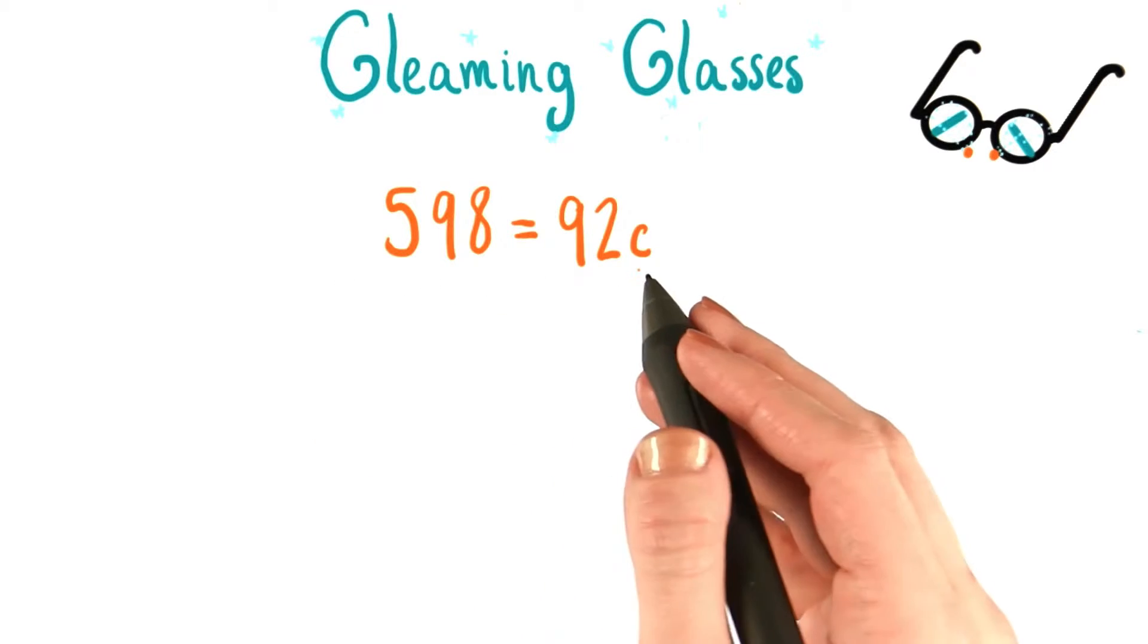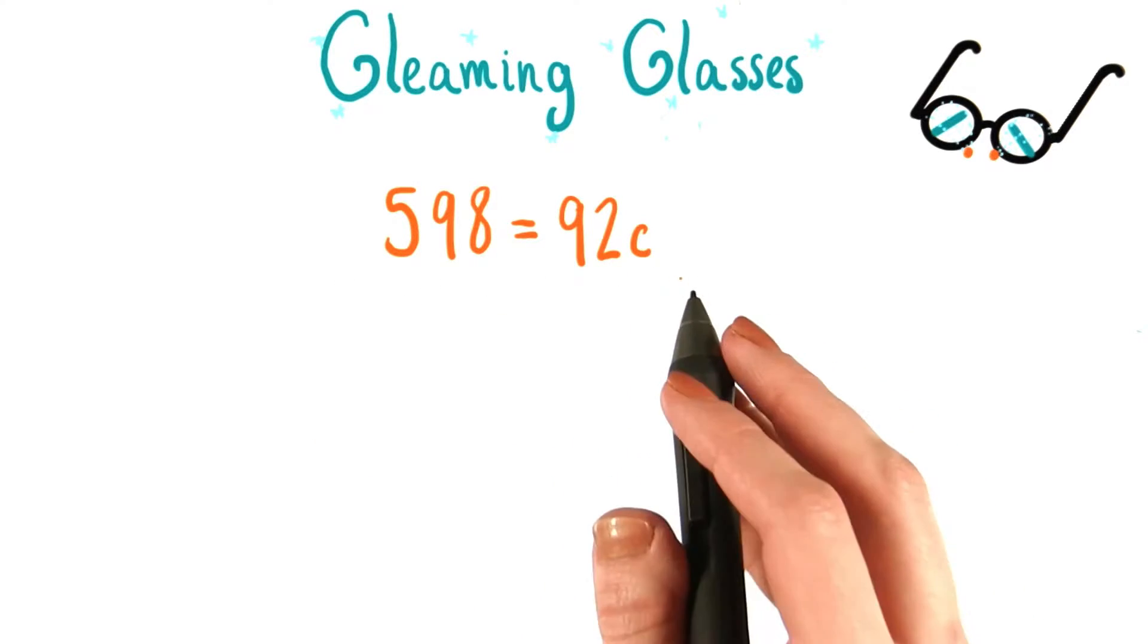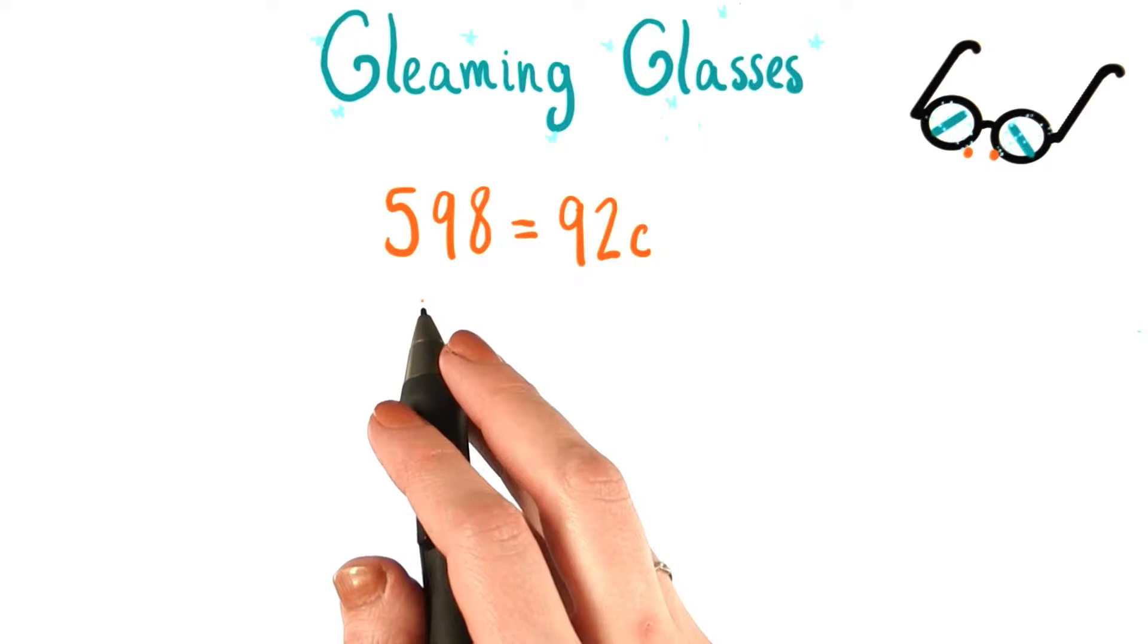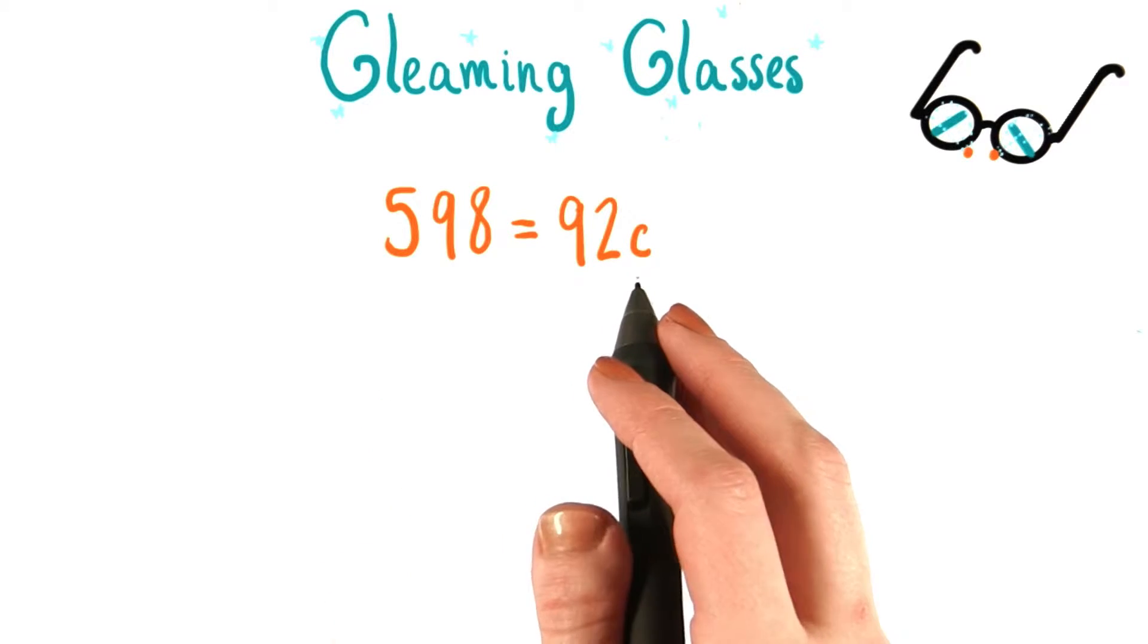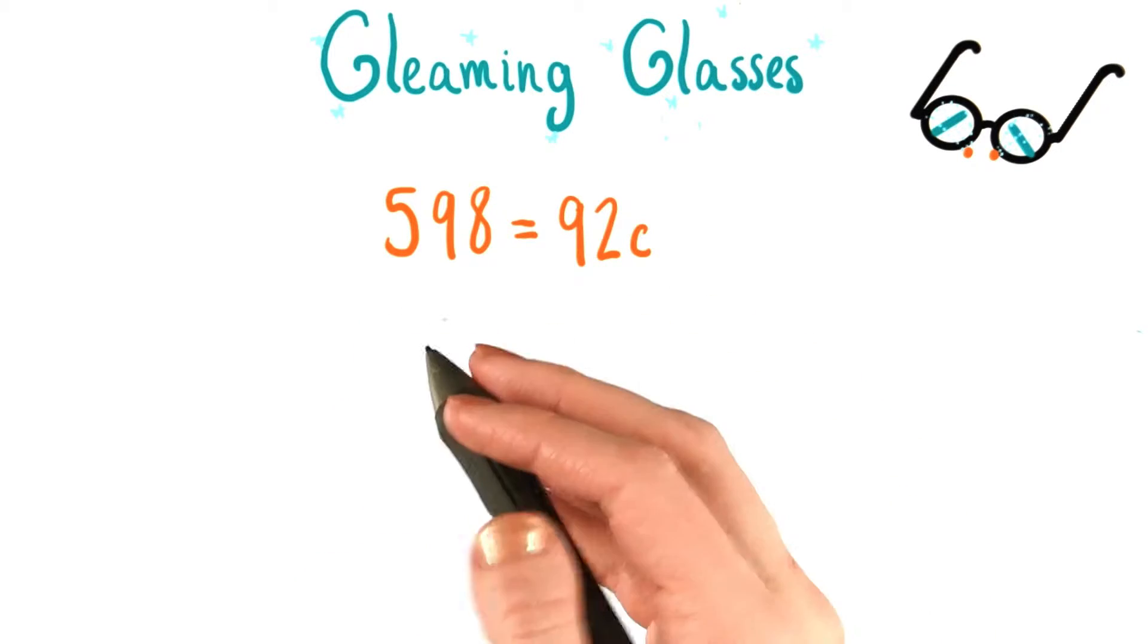To find out what c needs to equal to make this equation true, we have to modify both sides of the equation so that we get c by itself on one side of the equal sign, and everything else on the other side.